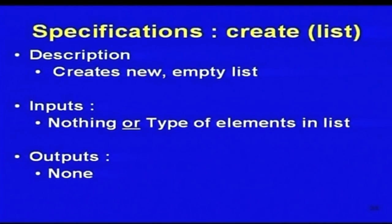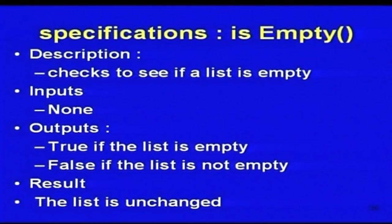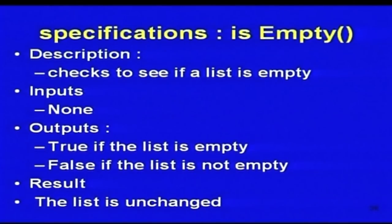Let us look at 'create'. The description is: it creates a new empty list. The input can be either no input or the type of elements — for example, integer or character. The output is an empty list. After the operation, a new empty list is created. Next is 'is_empty' — you want to find out whether a list is empty or not. The input is the list; the output is a Boolean — true if the list is empty, false if not. After this operation, the list remains unchanged.